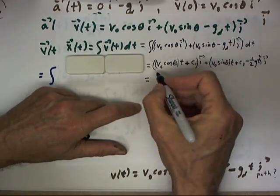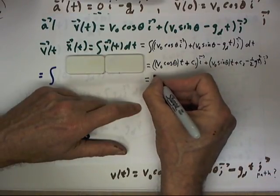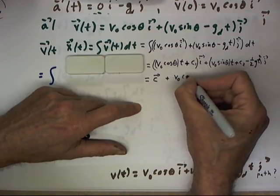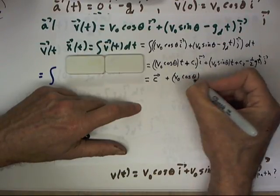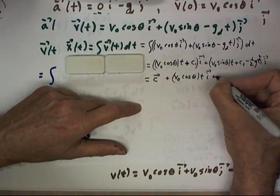Following what we did before, we're going to write the c1i plus c2j as just a constant vector c. And then we're going to write out our components.